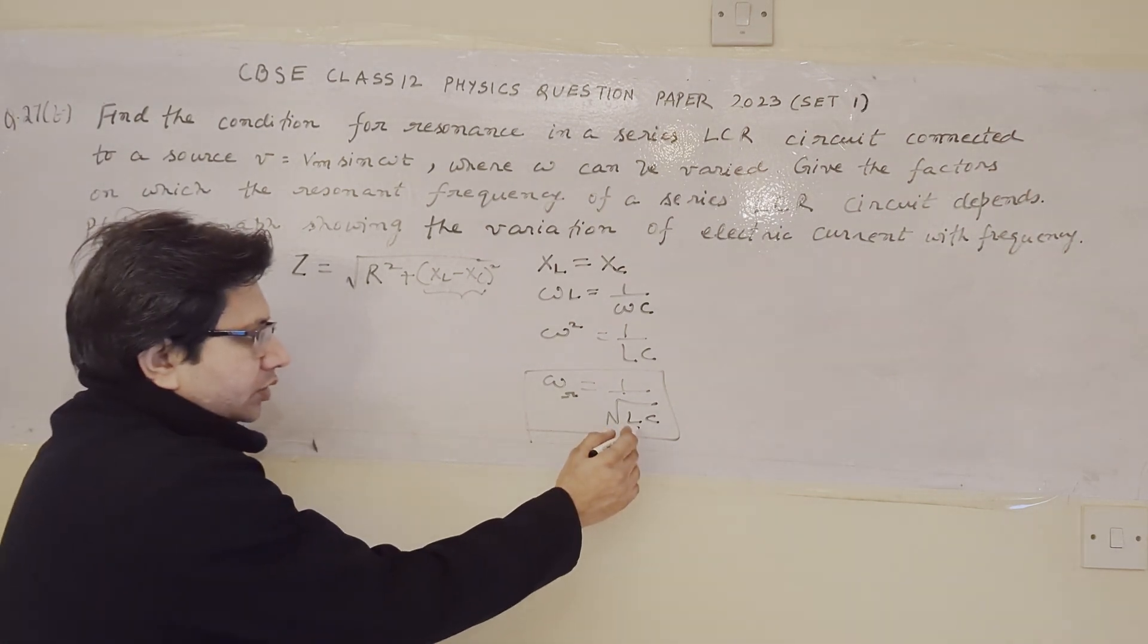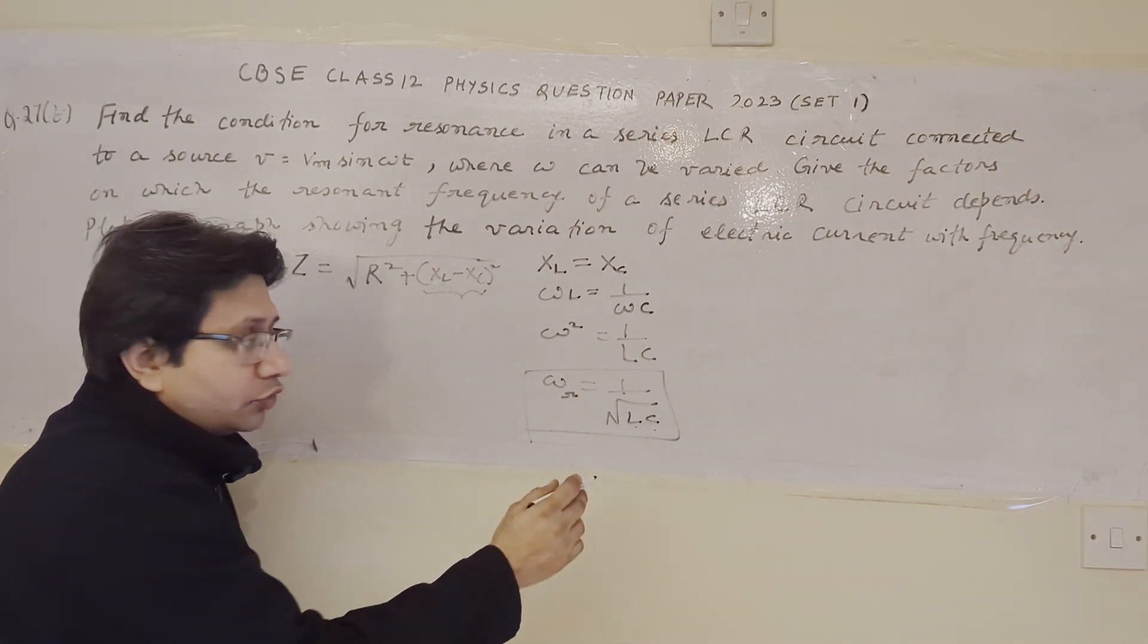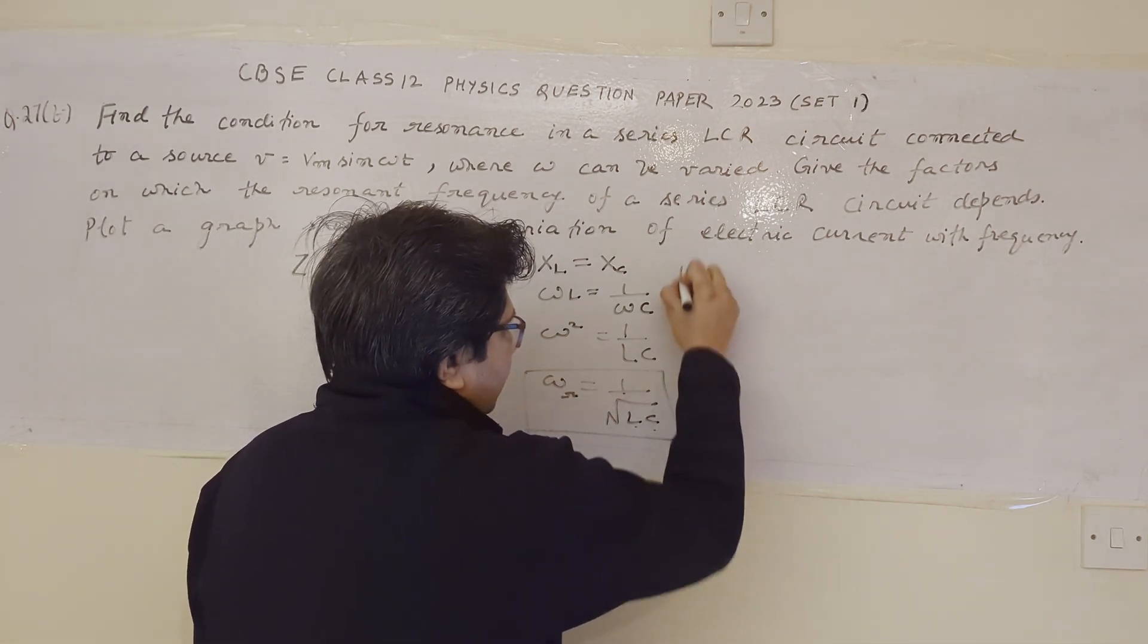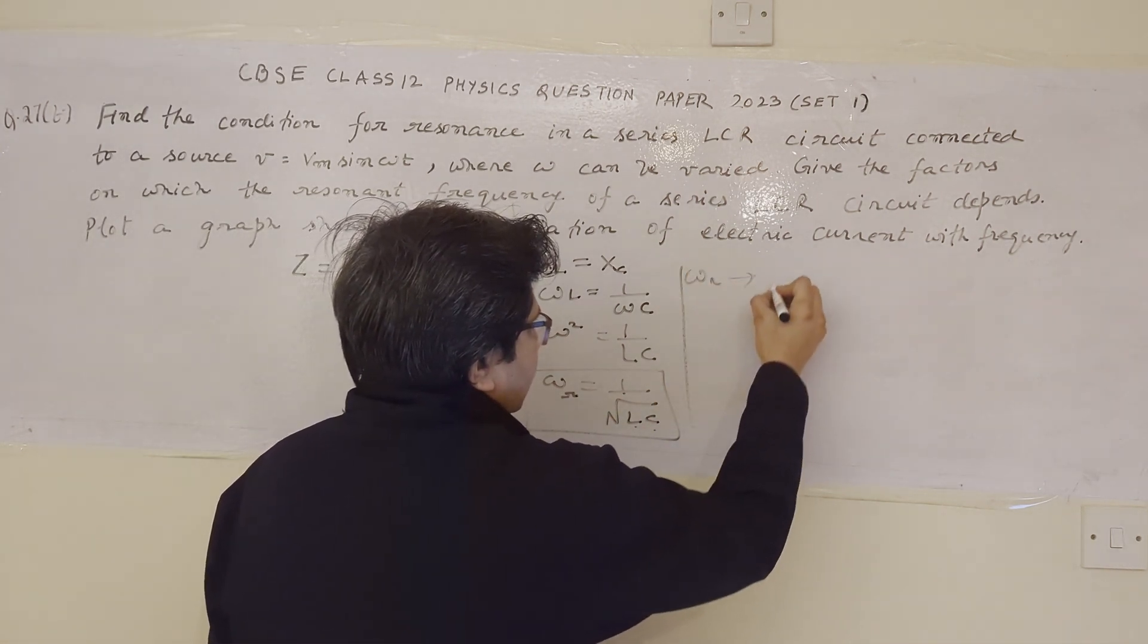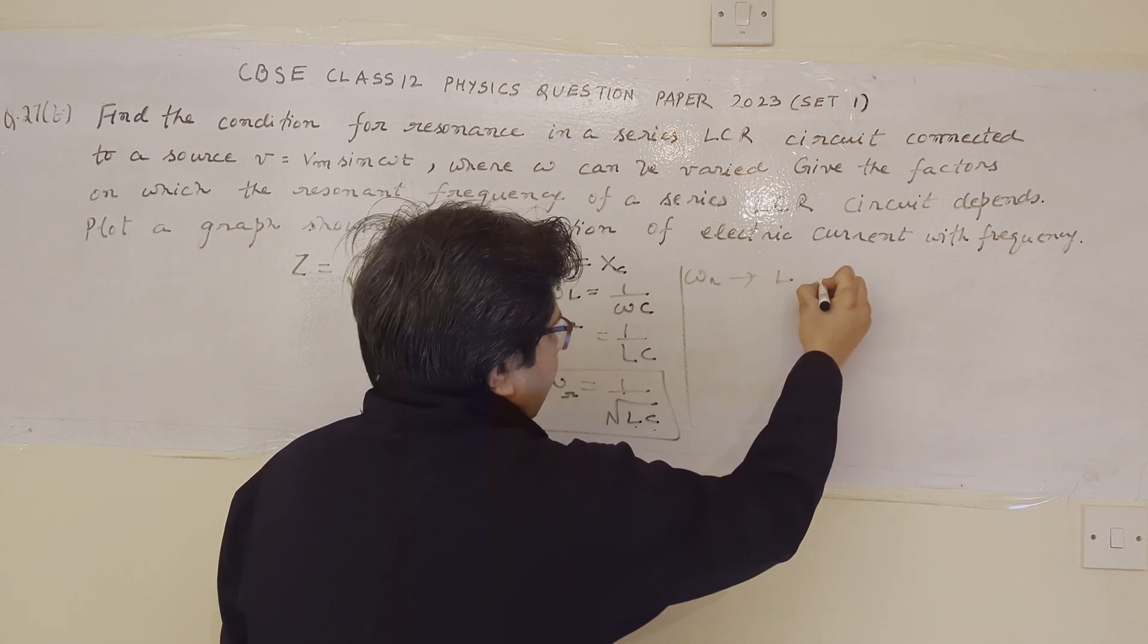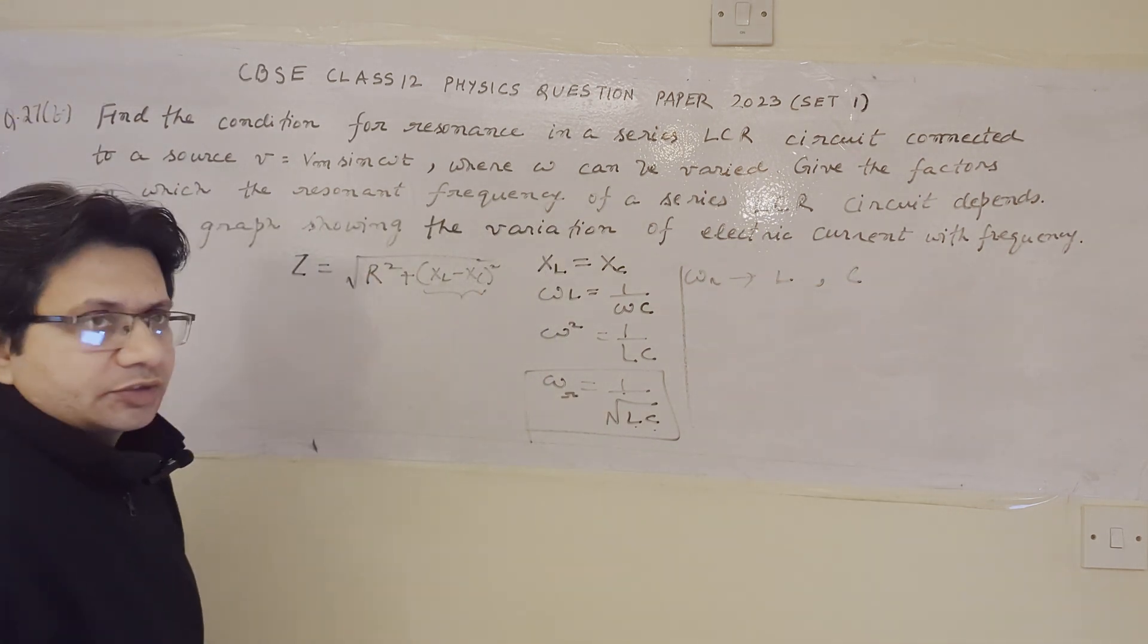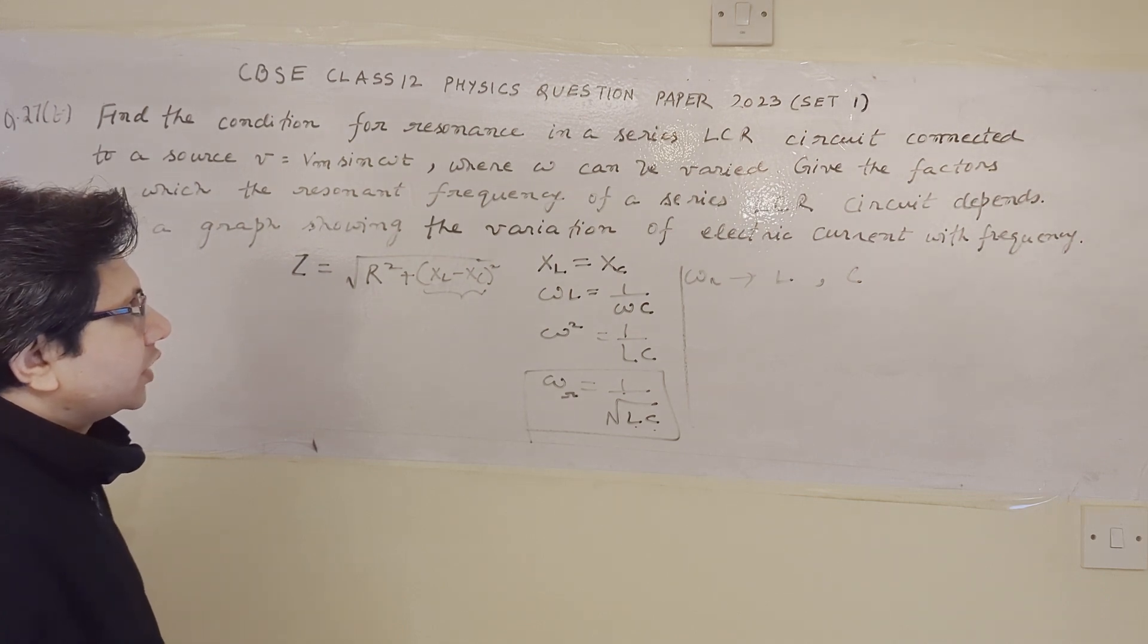Now, it depends upon two factors which is L and C, the value of inductance and the capacitance. So, we can say that the resonant frequency omega R depends upon L which is inductance and C which is capacitance in these two factors. On these two factors, it depends.